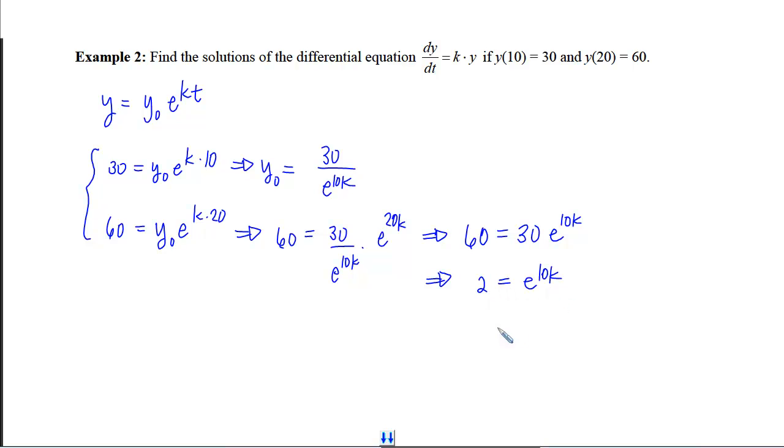Divide by 30, take the log of both sides, and then divide by 10. Now that we have k, we can plug it in up here and figure out that y initial is going to be 30 divided by e to the 10 times that 1/10 ln of 2. The tens cancel. I get e to the natural log of 2, which is the same as 2, which will give me 15.